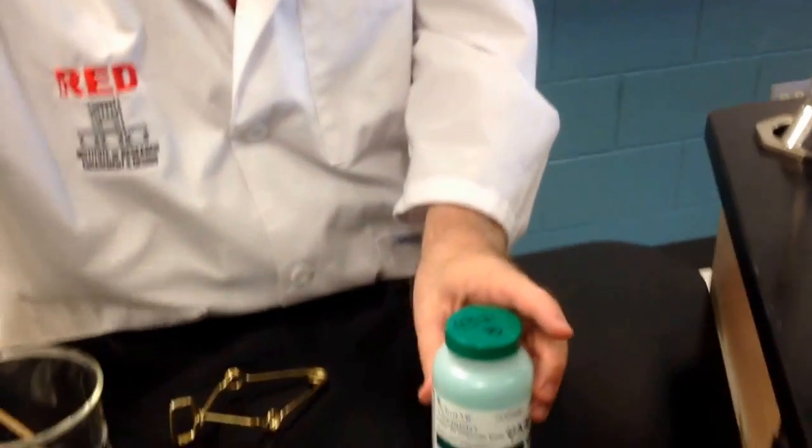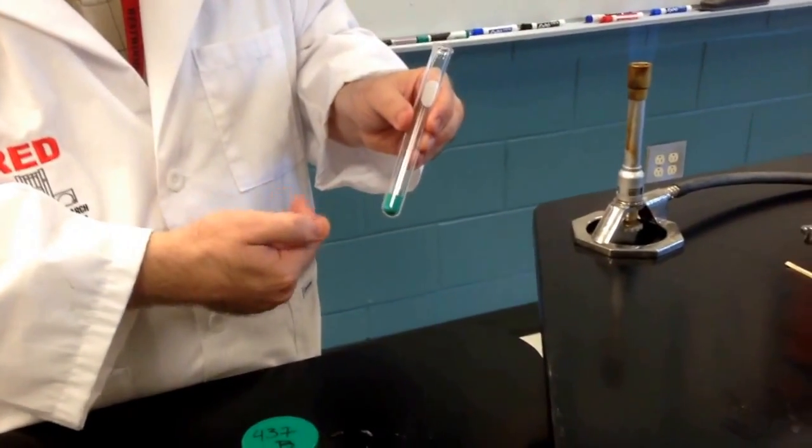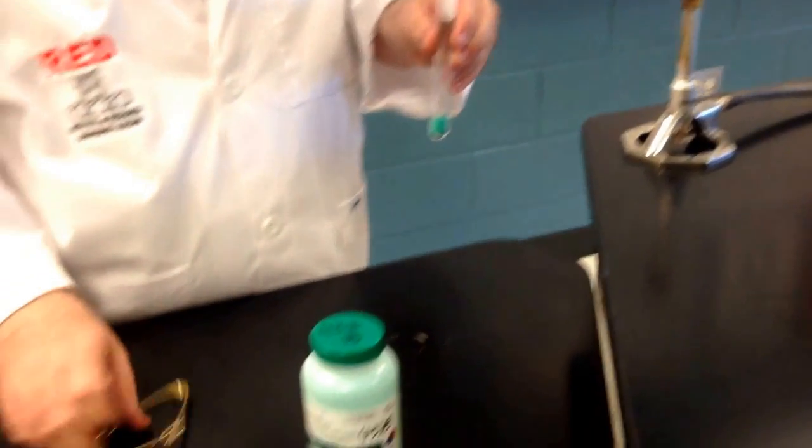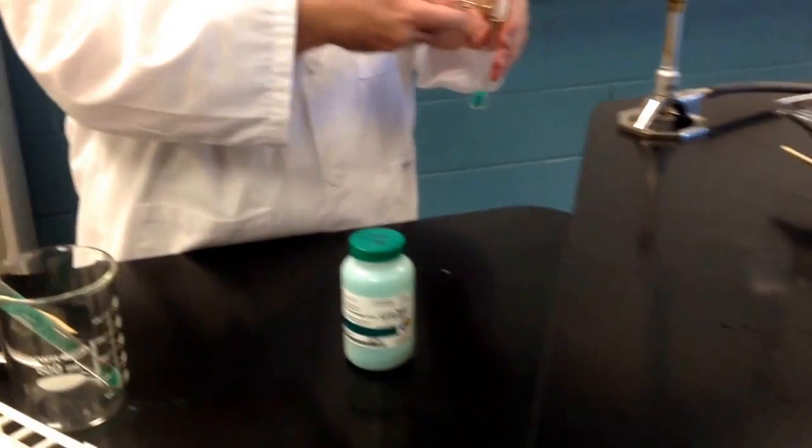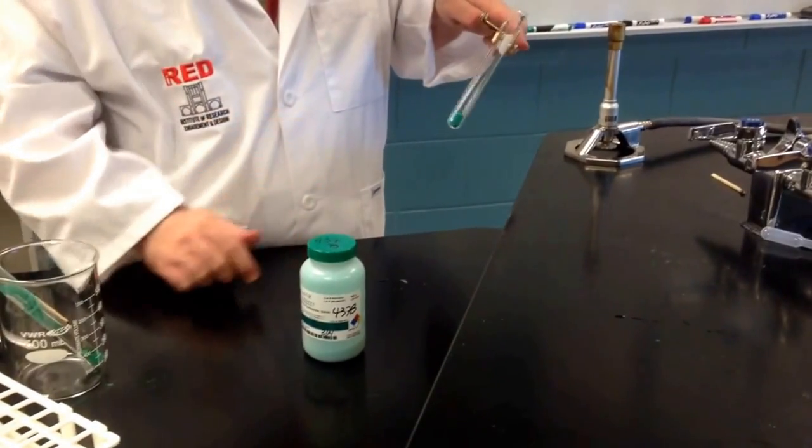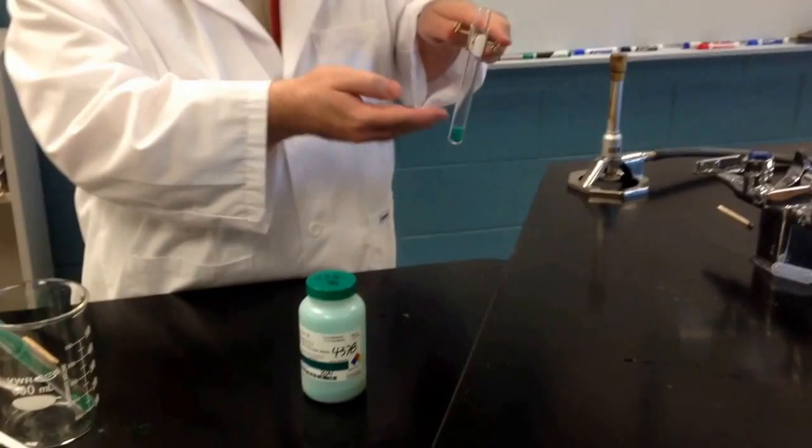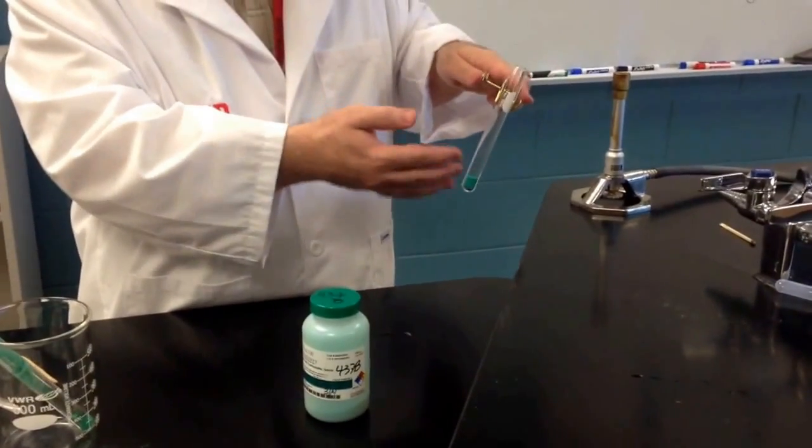We're going to take a test tube with about a scoop full of copper 2 carbonate. We're going to heat it evenly over a blue flame, holding the test tube away from yourself and away from others. And as it heats up, it will begin to bubble, and you'll see the powder bubbling a little bit.